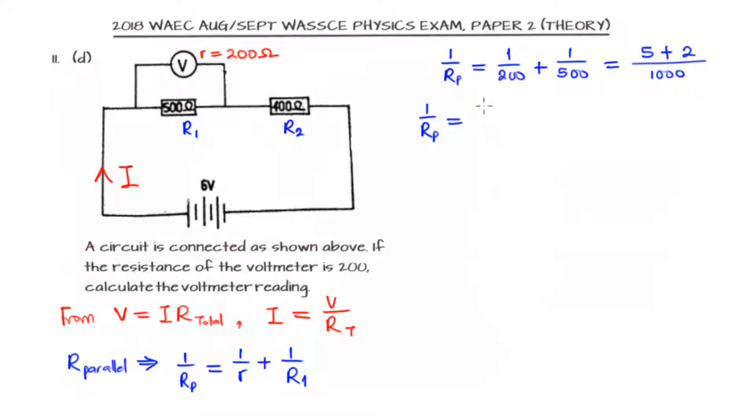So 1 over Rp is 7 over 1000, so that our Rp is 1000 over 7 if we find the inverse of both sides. But now that's not the total resistance.